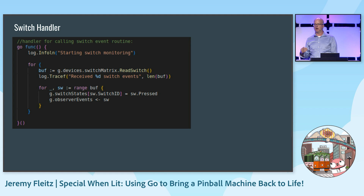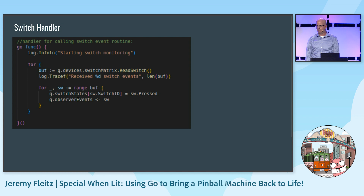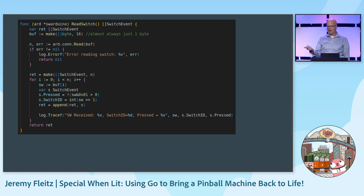Switching back from TinyGo, one of the last things we need to handle is taking inputs from the playfield. The switch handler is just another routine that's running. It takes whatever the switch value is — pressed or released — and sends it over to all the observers registered inside GoFlip. ReadSwitch makes a blocking call on read, which is also why it's in a separate Go routine, so other events can still happen.